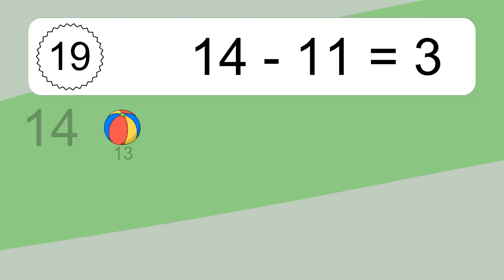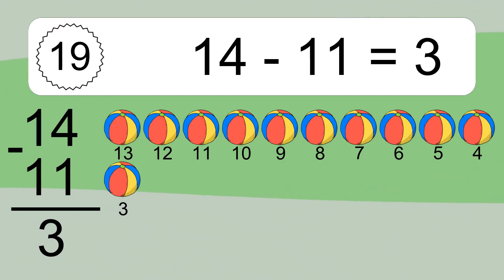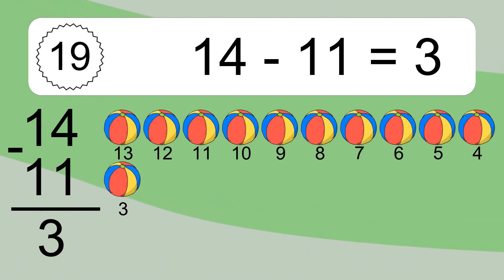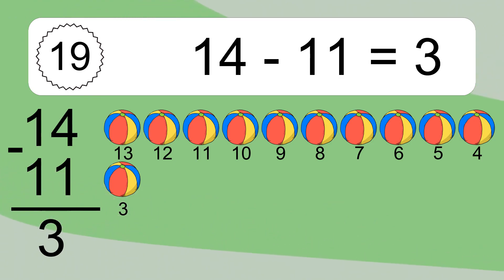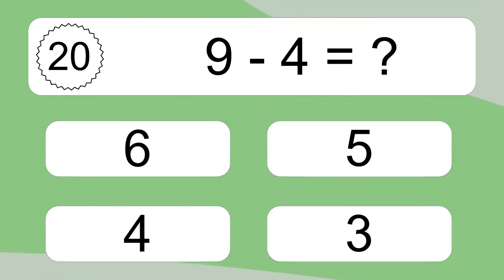14 minus 11 equals 3. Let's count it: 13, 12, 11, 10, 9, 8, 7, 6, 5, 4, 3. 9 minus 4 equals what?